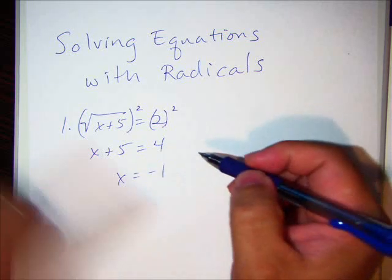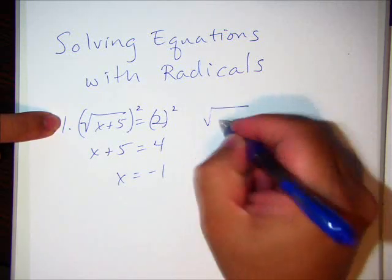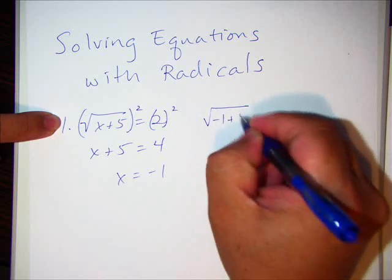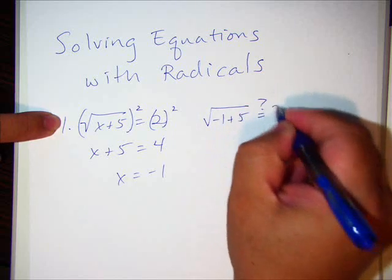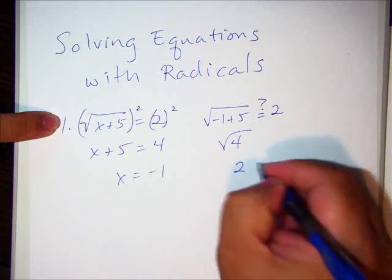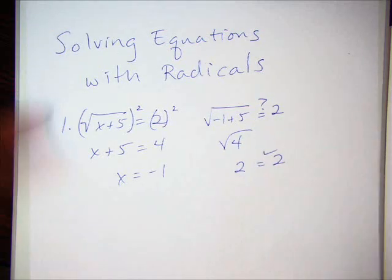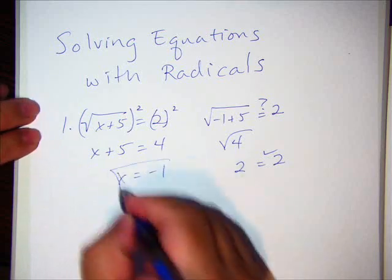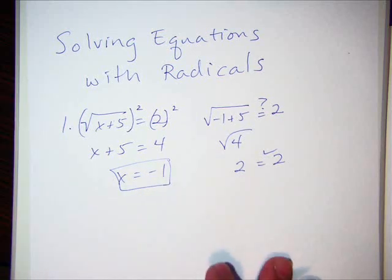I'm going to check the answer. To check the answer, I just simply plug it into the original. So it's -1 + 5. Is that equal to 2? Well, that would be 4. That's 2. So it ends up, yes. So x = -1 is an acceptable answer. Let's do another one.